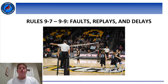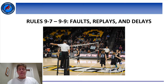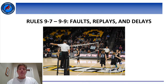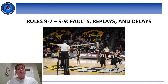The final three sections of Rule 9 deal with the outcomes of play. We'll talk about what happens when one or more people commit a fault, and how to handle unusual circumstances that involve issuing replays and delays. Between replays and delays, there are 24 different scenarios outlined in the book. We won't go through all of them here, but we will touch on the more common ones, so make sure you take the time to read through the rules and familiarize yourselves with the ones that aren't as common.